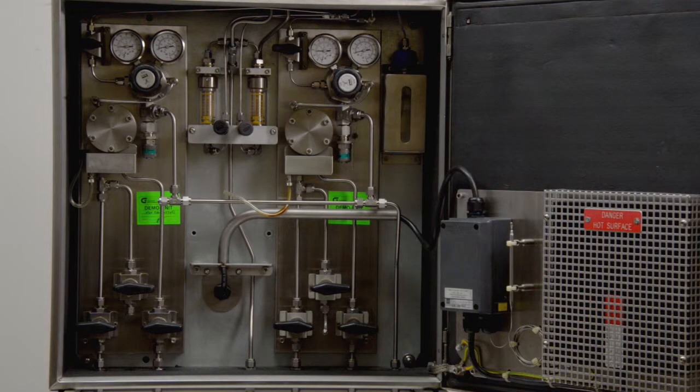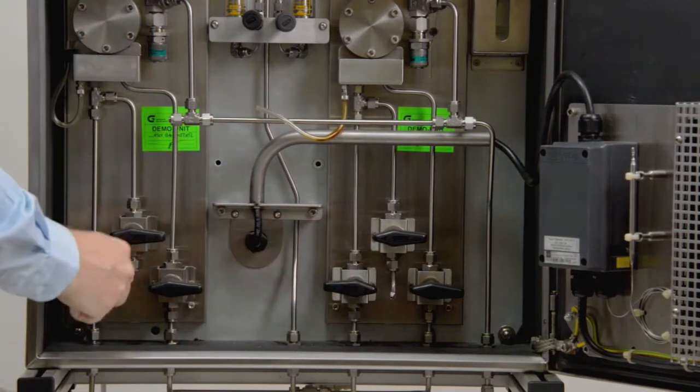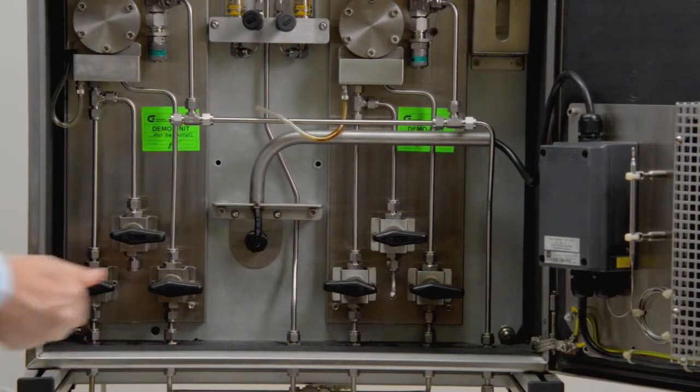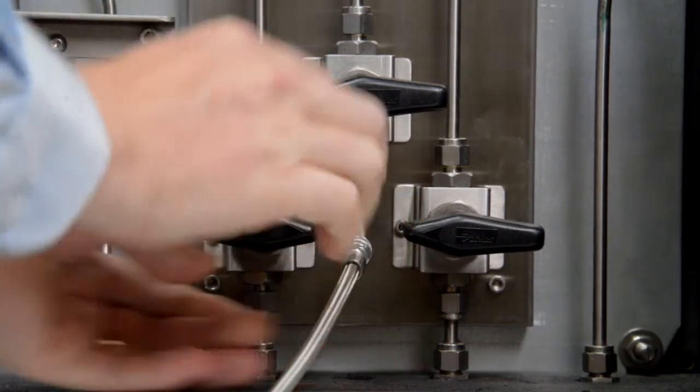A pressurized cleaning fluid can be attached to the fast sample loop. Close the stream valve, attach the tubing of the cleaning fluid and open the cleaning valve.